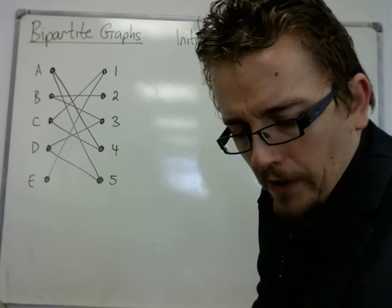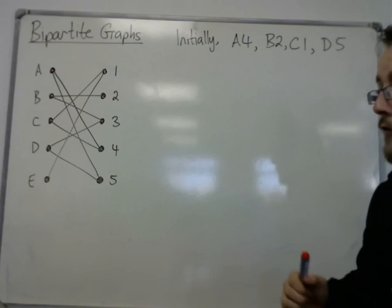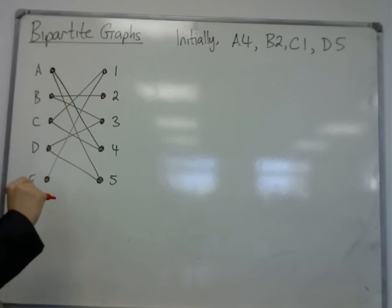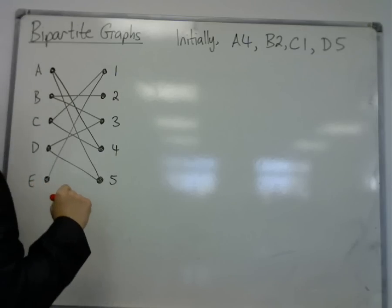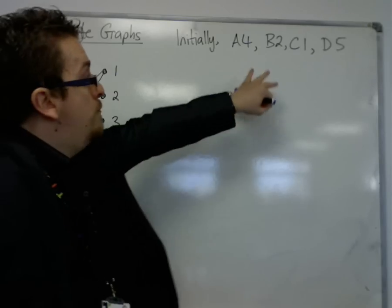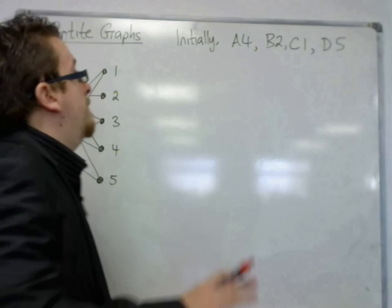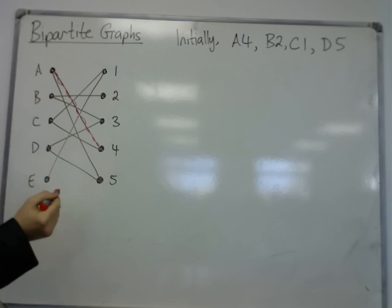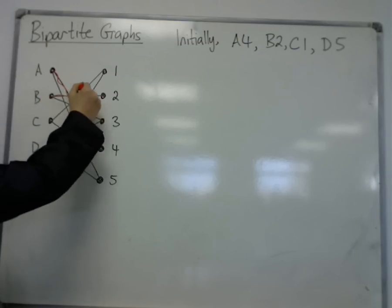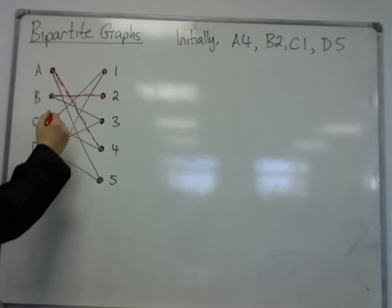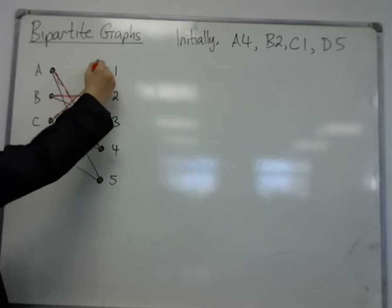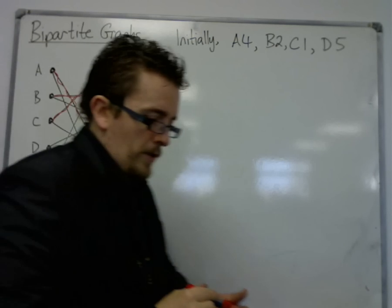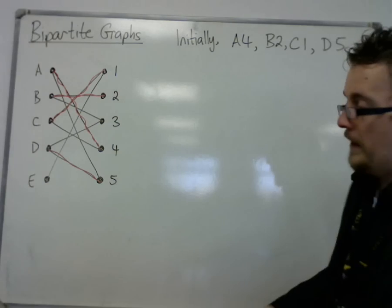So first of all, what I'm going to do is highlight the edges that we have as an initial matching. The initial matching will be given to you in the exam. So A4, B2, C1, and D5. That's the first thing to do.